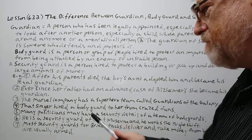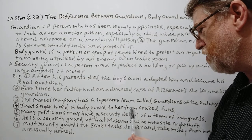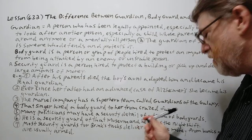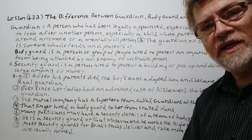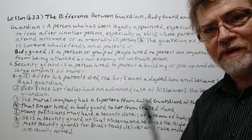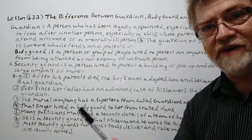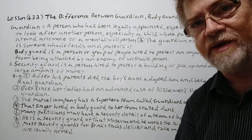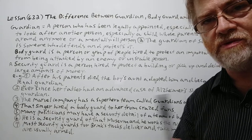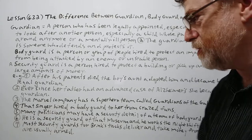Number five: many politicians have a security detail — a team of bodyguards. If you're important enough, you probably don't even have just a single one; you might have several working together, especially a politician or some other important person.